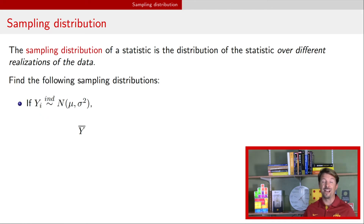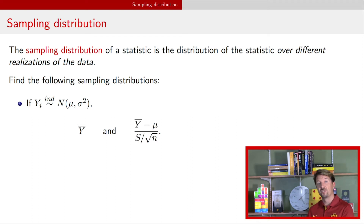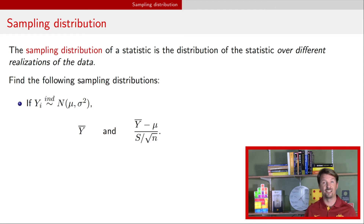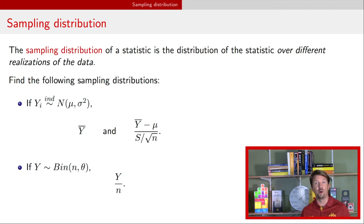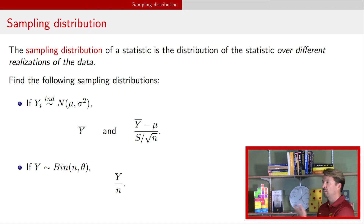If you have normal data, we're going to talk about what the sampling distribution of the average of that normal data is. We're also going to talk about the sampling distribution of this statistic: if you take the average, subtract off the mean, and divide by the sample standard deviation over the square root of the sample size. The other model is a binomial model with an unknown probability of success theta, where we calculate the sample proportion — the proportion of successes y over n.